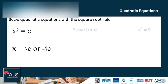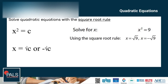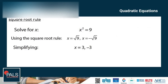Let's try an example. Solve for x: x squared is equal to 9. We use the square root rule when an equation has a single squared term and no other variables. Using the square root rule, we have x is equal to the square root of 9 and x is equal to the negative square root of 9. To simplify, the answer is x is equal to 3 and negative 3.